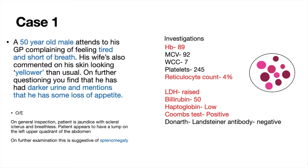Finally, there is something called Donath-Landsteiner antibodies, which are specific to cold autoimmune hemolytic anaemia. In general, autoimmune hemolytic anaemia can be split into warm or cold. In this case, our patient had warm autoimmune hemolytic anaemia. In cold autoimmune hemolytic anaemia, the patient typically presents with symptoms in the cold and may also present with Raynaud's phenomenon — a change in colour of the fingers from white, to blue, to red — illustrating that the vessels are going into spasm and affecting blood flow to the fingers. A negative result suggests the disease is not related to cold autoimmune hemolytic anaemia, making it a useful differential to rule out.